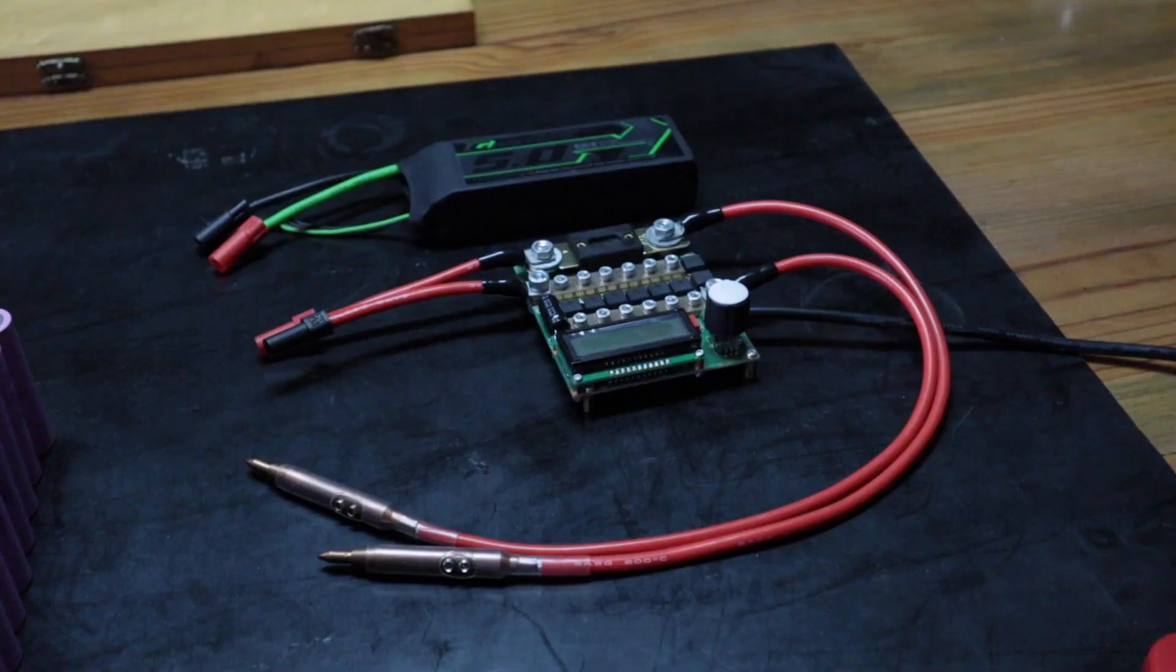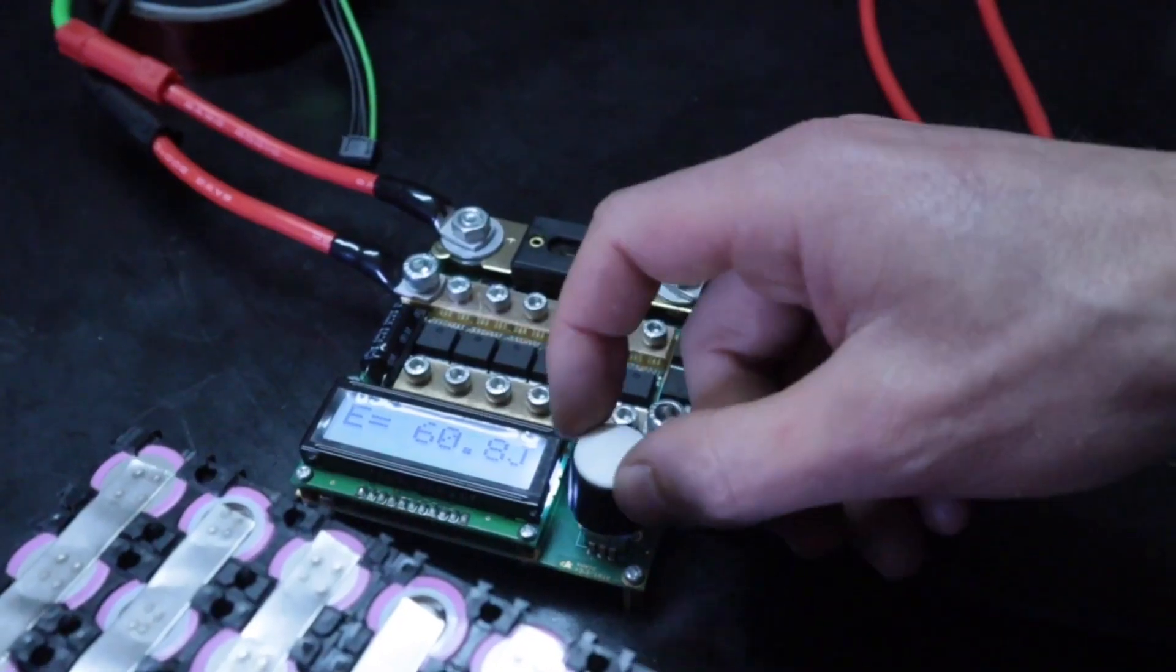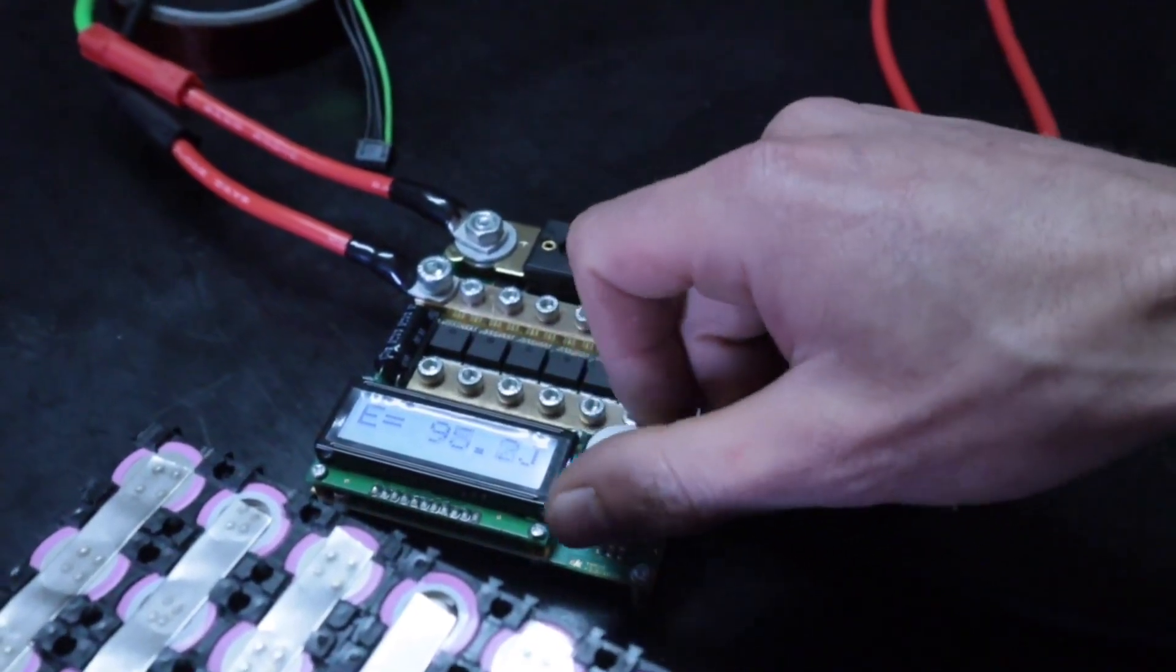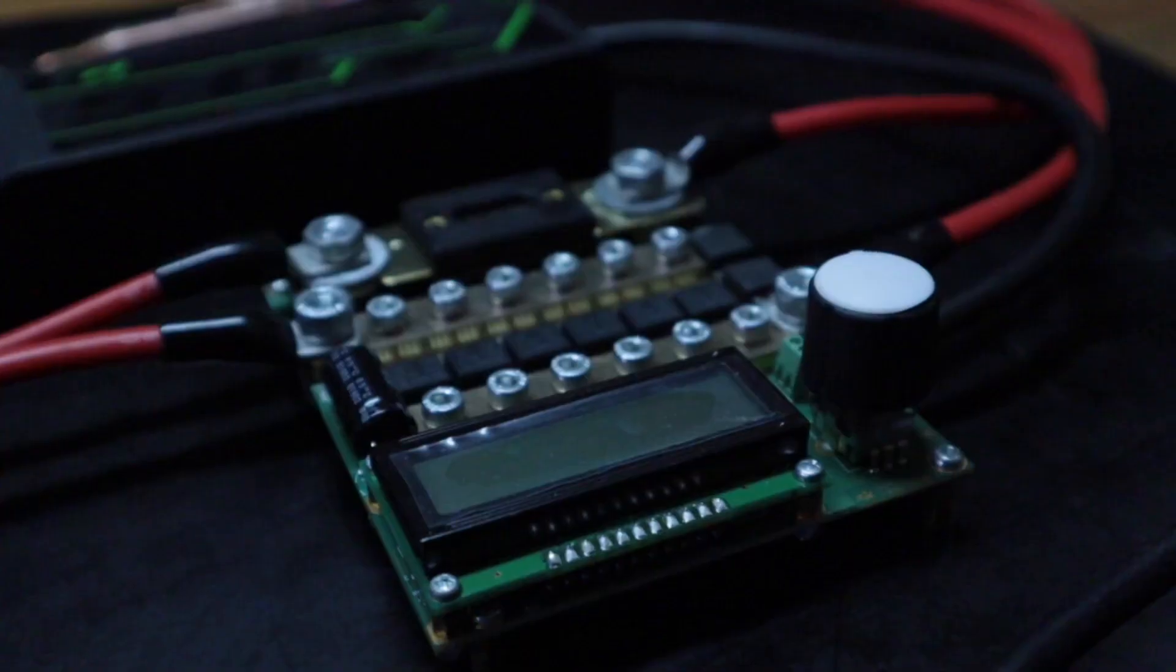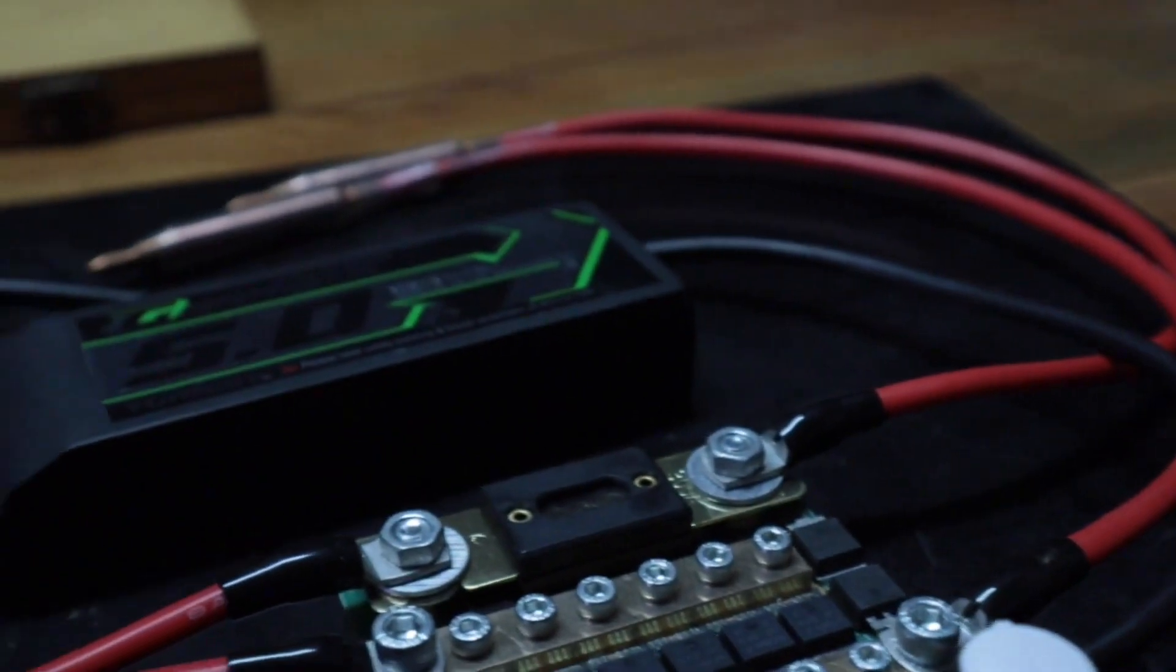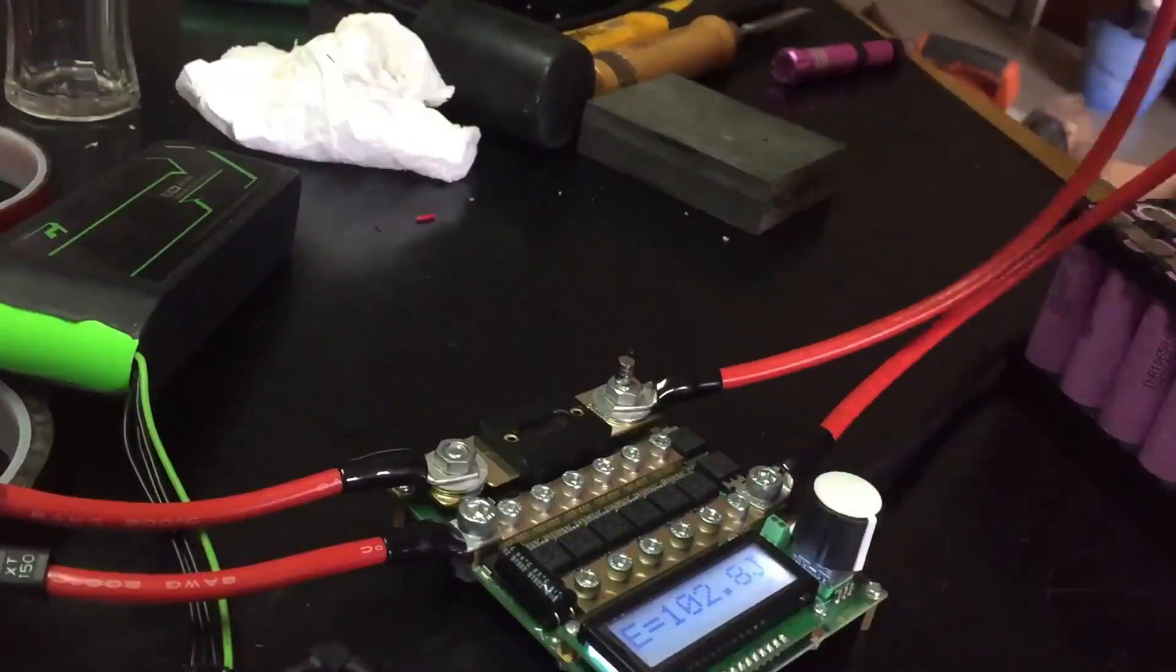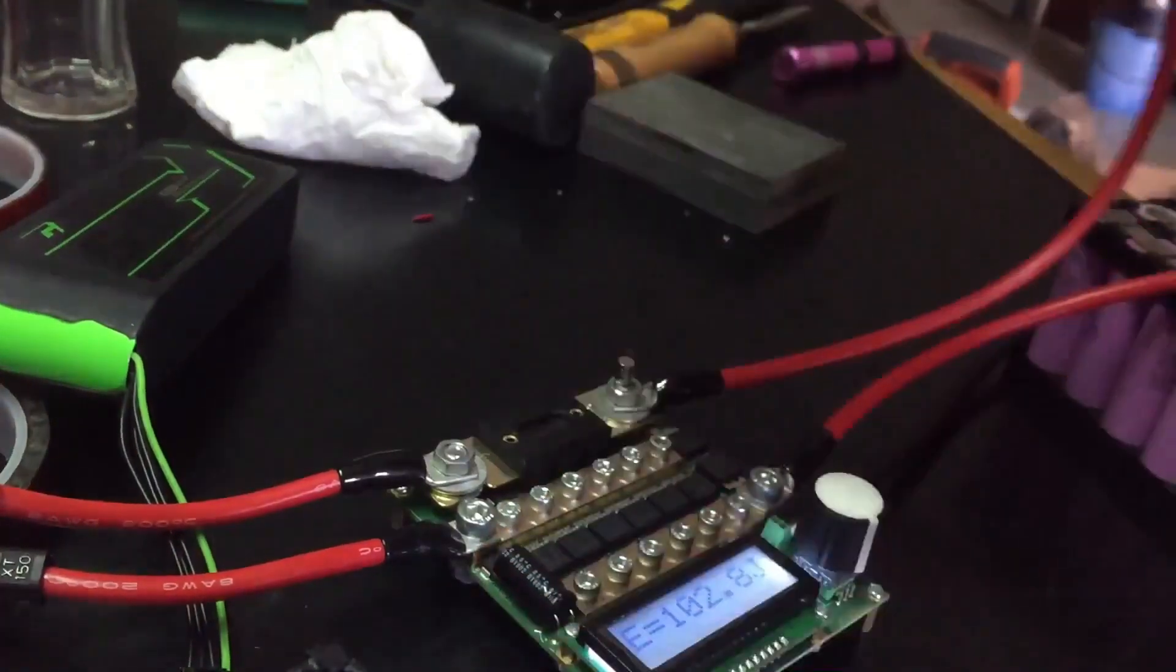To provide the weld, we are using a K-Weld spot welder alongside a Hobby King 3S 5 amp hour LiPo graphene battery capable of up to 1500 amps in a short pulse.